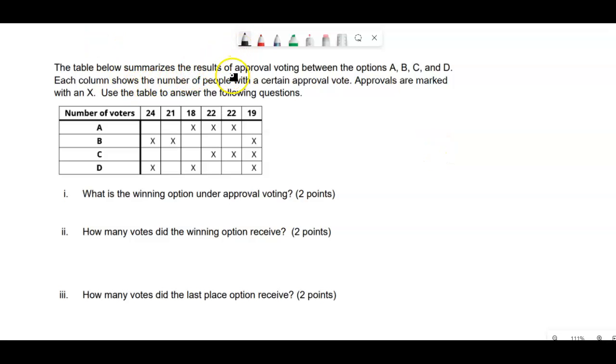The table below summarizes the results of approval voting between options A, B, C, and D. Each column shows the number of people with a certain approval vote. So we know about approval voting, I hope. What is the winning option under approval voting?